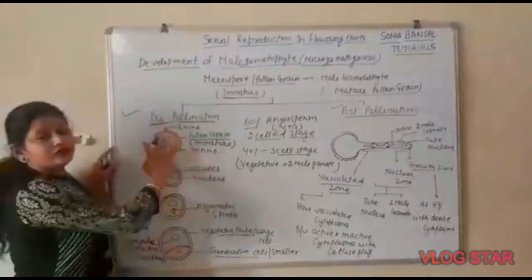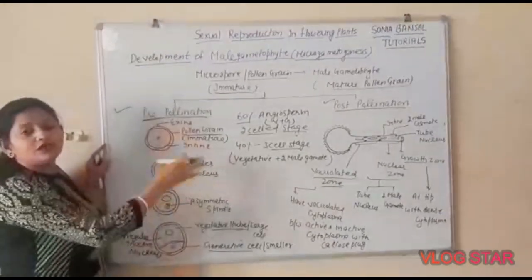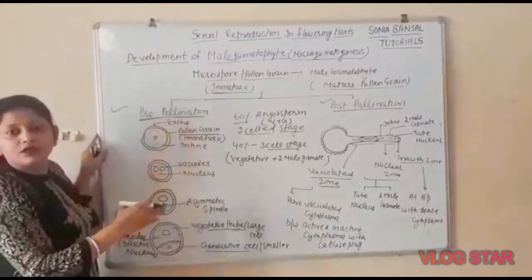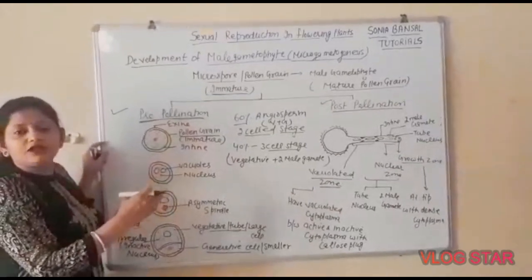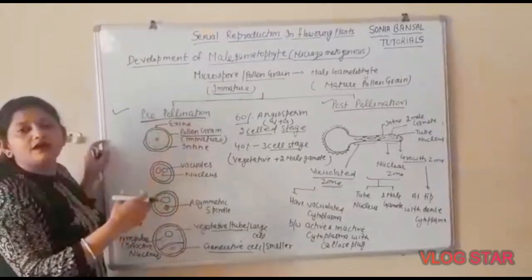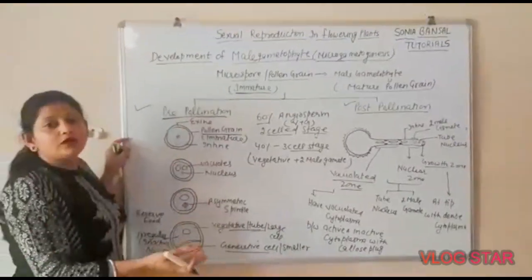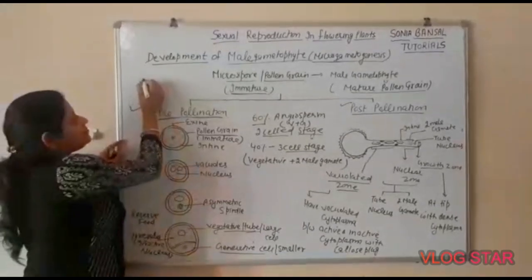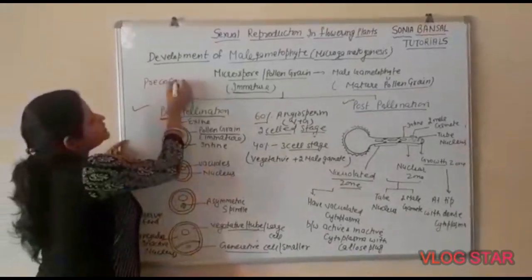This development of the pollen grain occurs before the pollen grains are shed — that is, inside the pollen sac. This development is called precocious development.